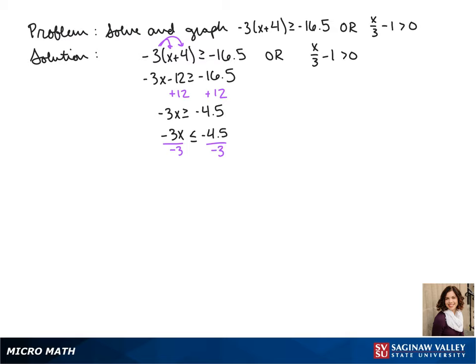When we divide by a negative we have to flip the sign. So after we simplify this we get x ≤ 1.5.